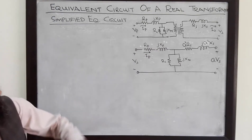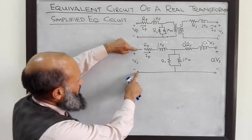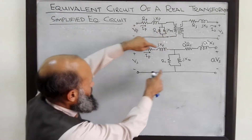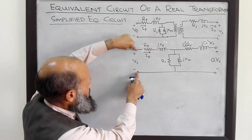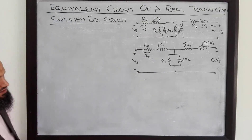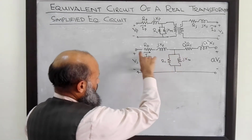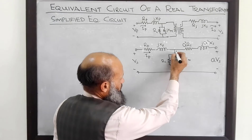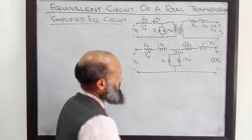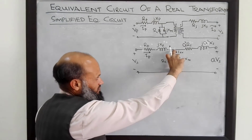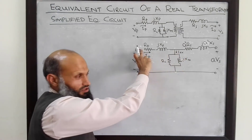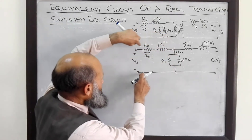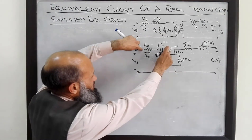This implies that this voltage will be approximately equal to this input voltage, since the voltage drop is very small. Therefore, this voltage is approximately equal to this voltage. The excitation current is flowing through this branch, and if I draw this branch at a different location, almost the same current will be flowing there, because this voltage is approximately the same as this voltage since this voltage drop is small.